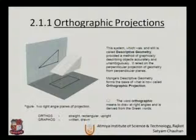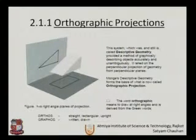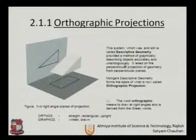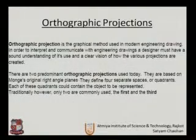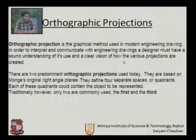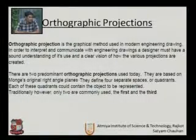The word orthographic means to draw at right angles and is derived from the Greek word 'orthos,' meaning straight, and 'graphos,' meaning to write or to draw. Hence the word orthographic came into existence. The theory behind orthographic projection is the graphical method used in modern engineering drawing. In order to interpret and communicate engineering drawings, a designer must have a sound understanding of its use and a clear vision of how the various projections are to be created. In orthographic projection, they are based on parallel perpendicular projection from perpendicular planes.